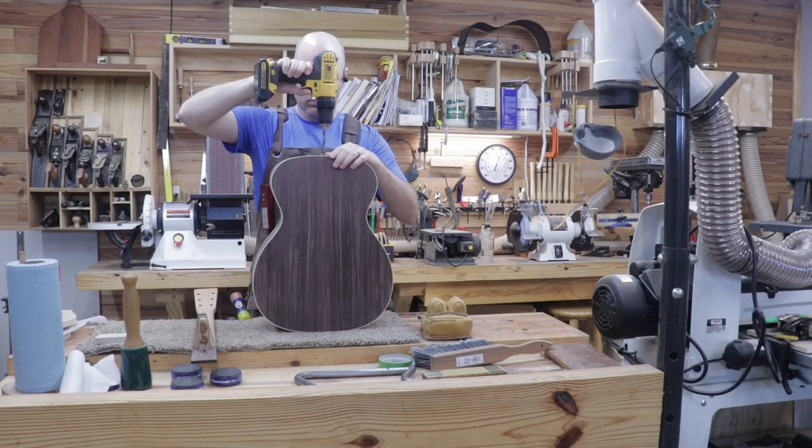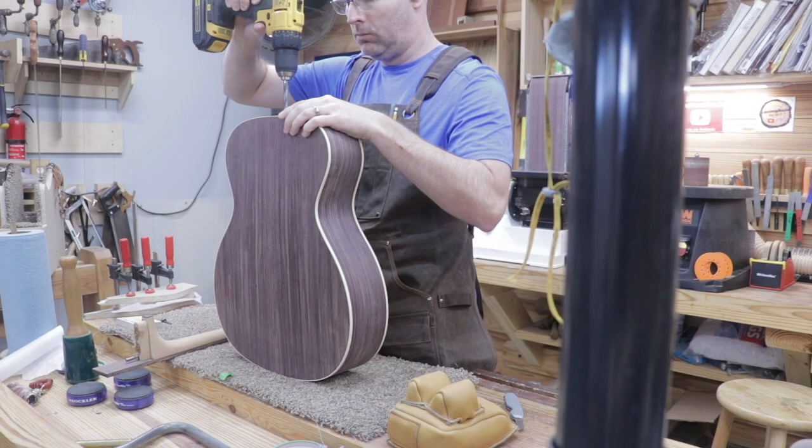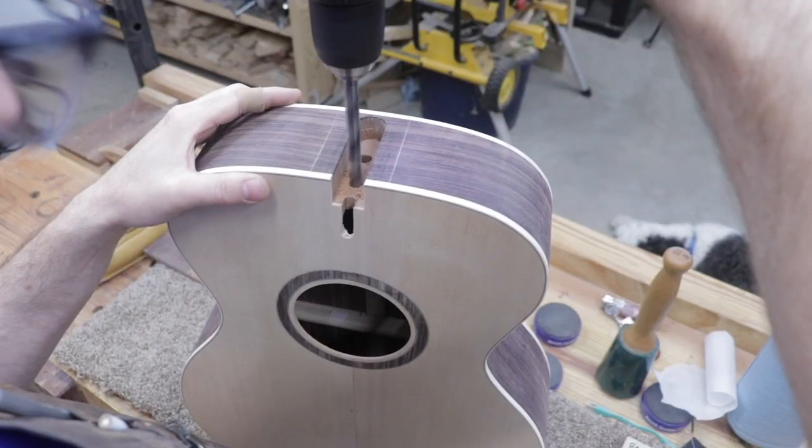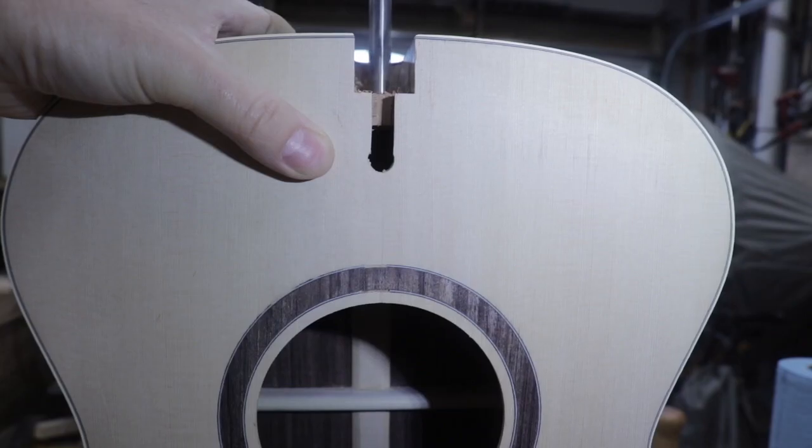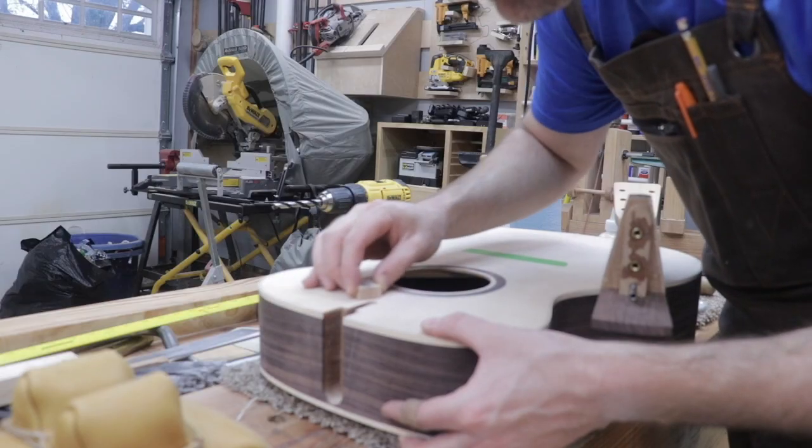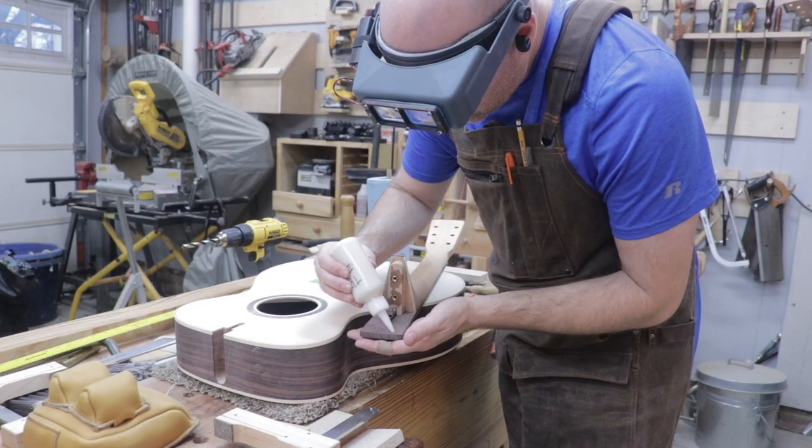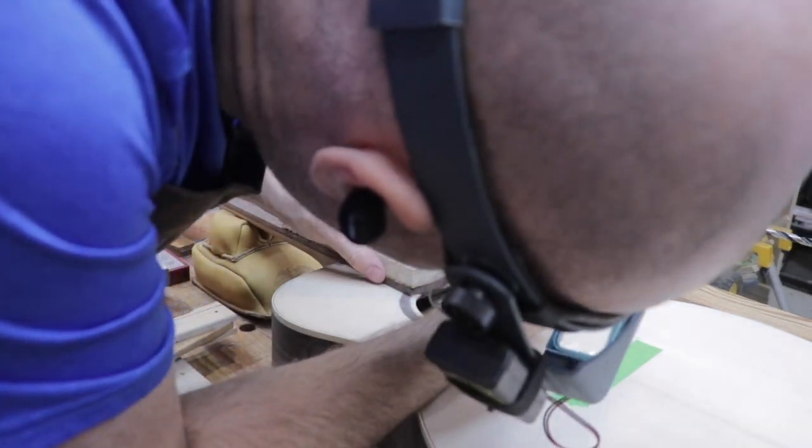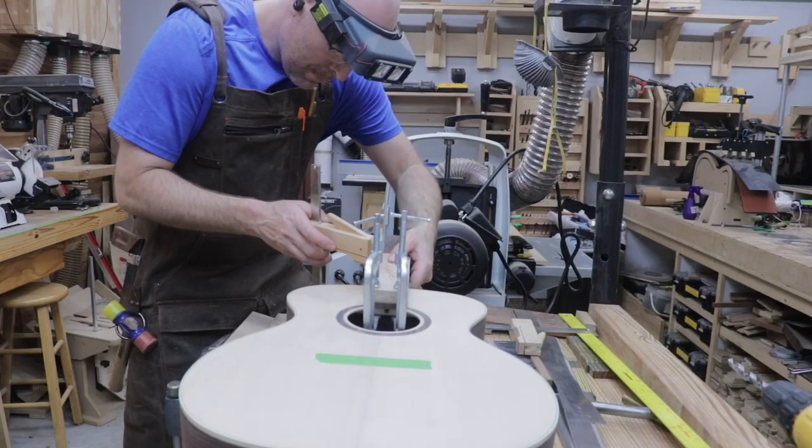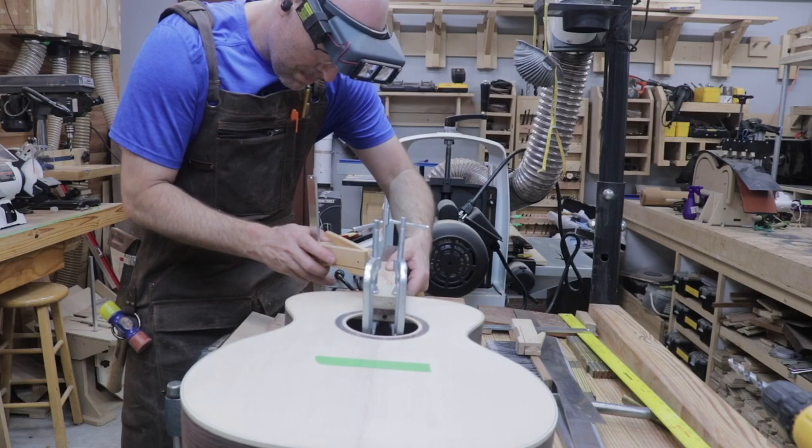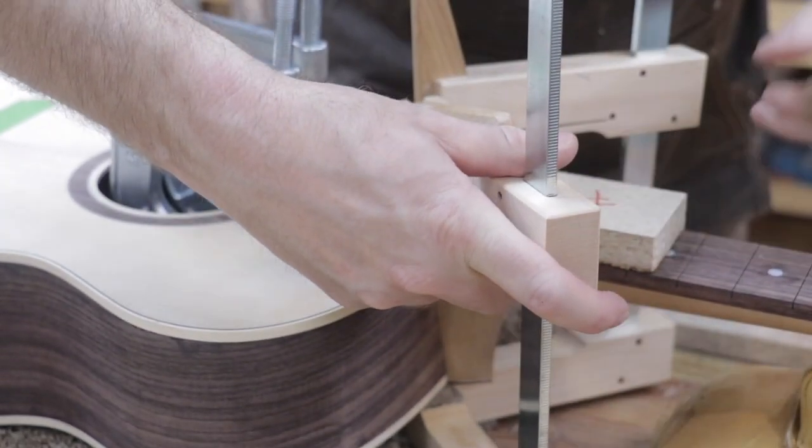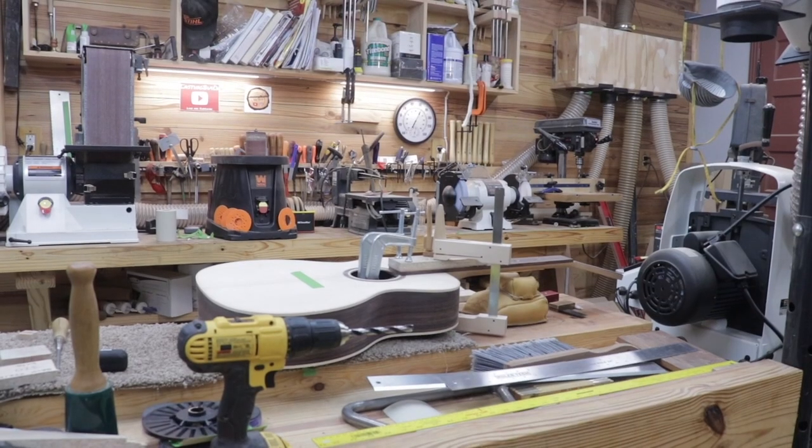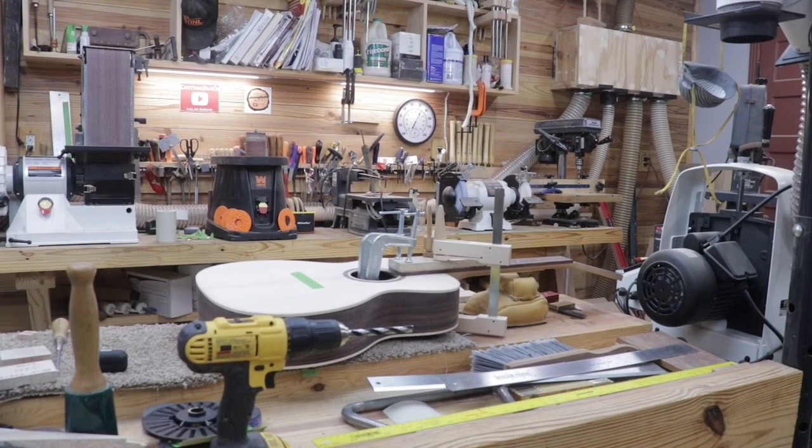Before we glue the neck to the soundbox, I drilled two holes for the bolts that connect to the tenon. This joint is called a bolt-on mortise and tenon. I was careful not to blow out the back side of the neck block when drilling. I did not apply glue to the mortise or tenon, only to the fretboard tongue. That way, if the neck ever needs to be removed for repairs, it will be much easier to remove. If the mortise and tenon was glued, it would probably be impossible to break apart without significant damage to the guitar.